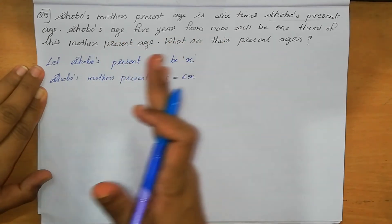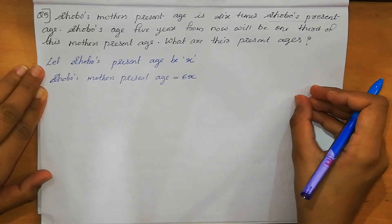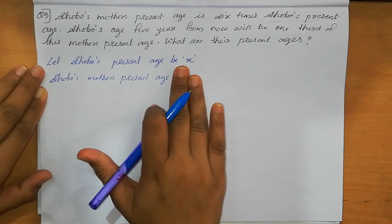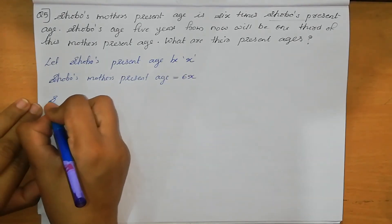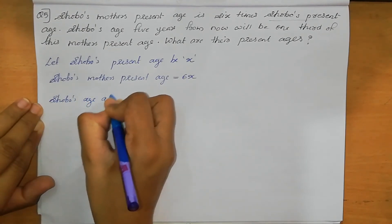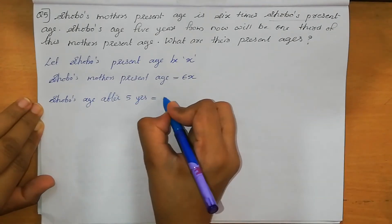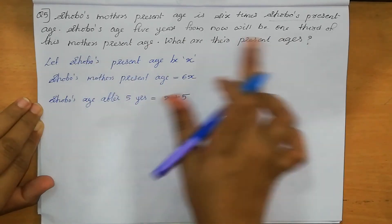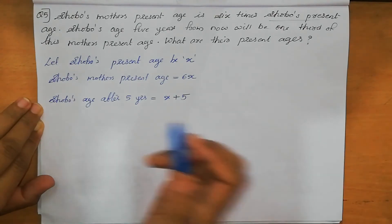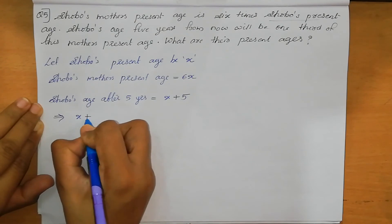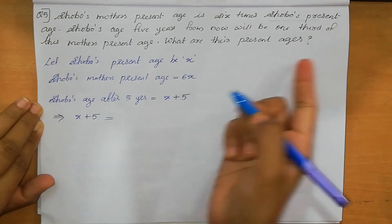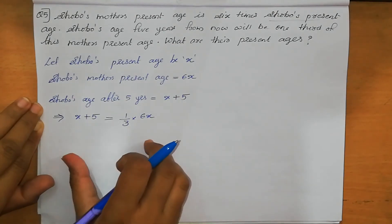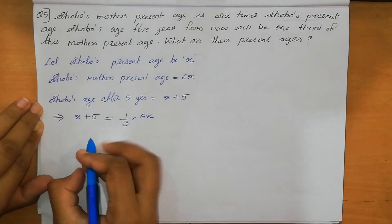Shobo's age 5 years from now — from now means in future. Suppose your age is 12 years now; after 5 years it's 12 plus 5 equals 17. So after 5 years, Shobo's age becomes X plus 5. Shobo's age 5 years from now will be one third of the mother's present age — this is the condition given.